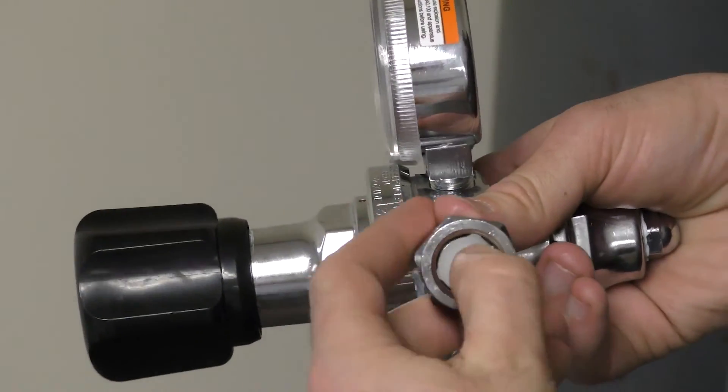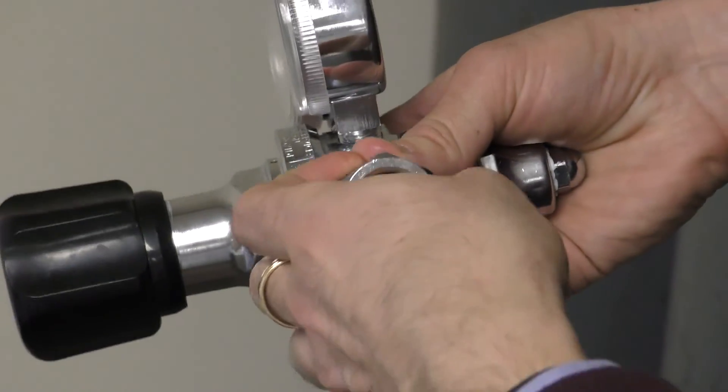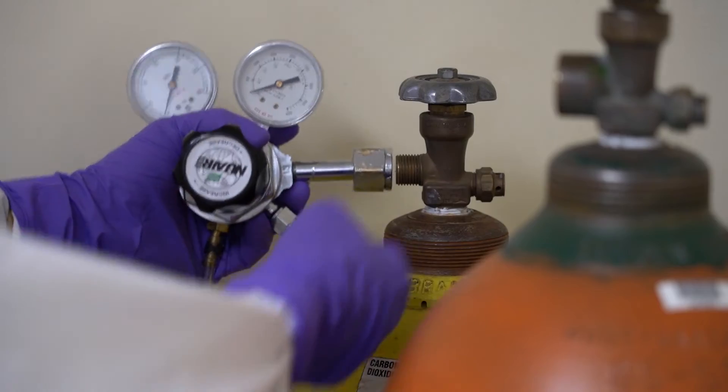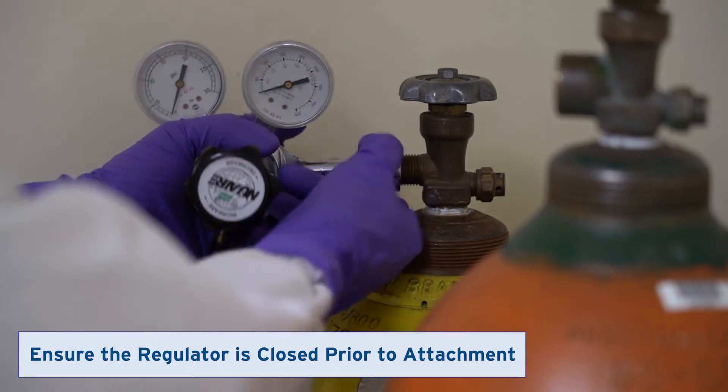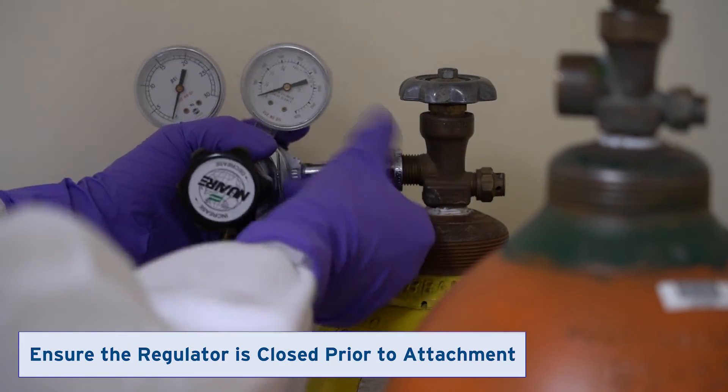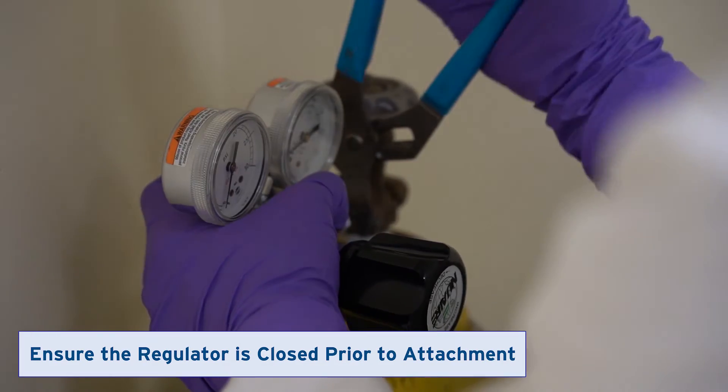Place the disc seal included with the CO2 regulator. Attach the CO2 regulator to the CO2 tank with a wrench.